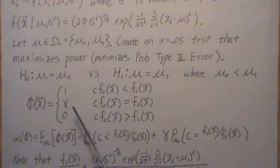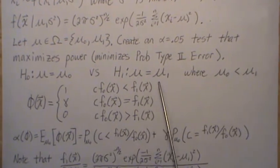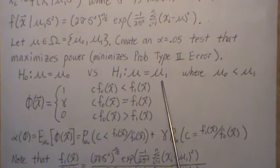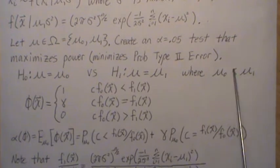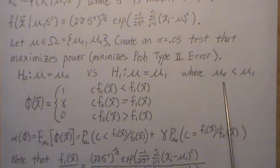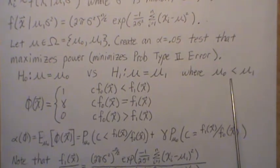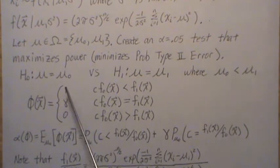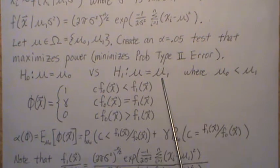Our hypothesis is that mu equals mu naught versus that mu equals mu one. We assume that mu one is greater than mu naught, and I will show you where that plays a part. This is a simple hypothesis because there is only one value in each hypothesis in the parameter space, so it's a simple versus simple test.